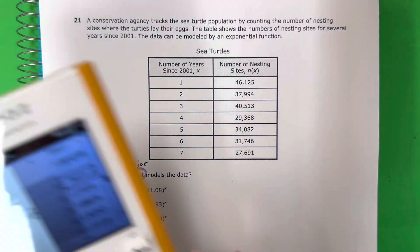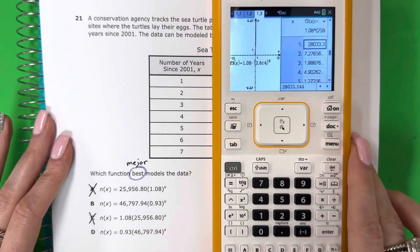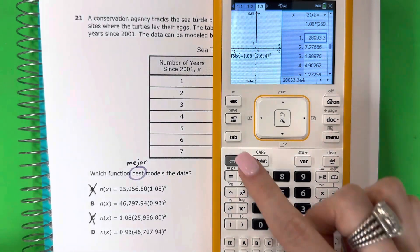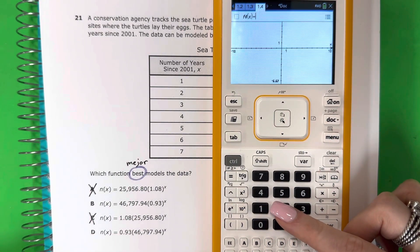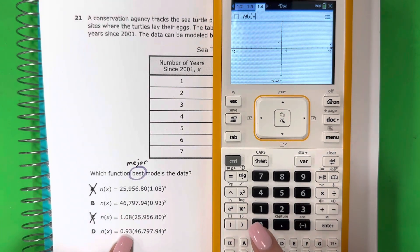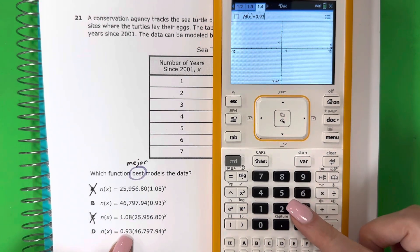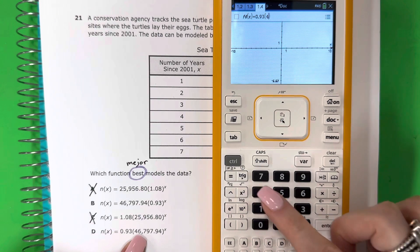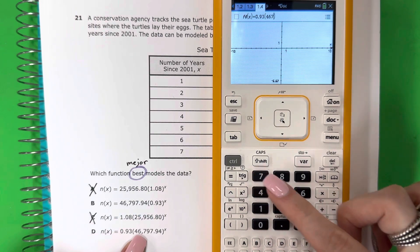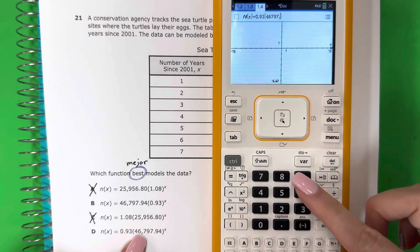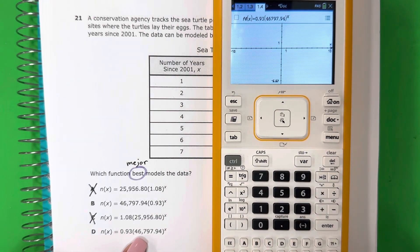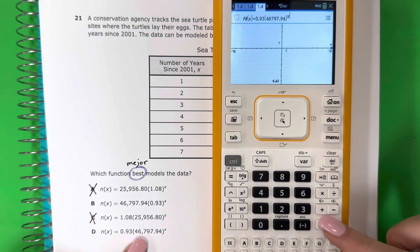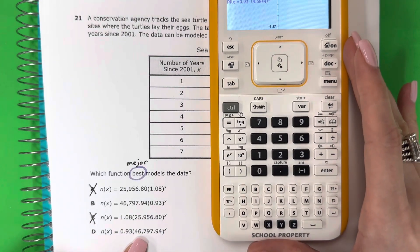Let's go ahead and try D. Ahora la D. Let's do control doc. 2. And let's go ahead and put this one. 0.93, parenthesis, 46,797.94, close parenthesis, exponent x. Remember, no comma. Recuerda, sin coma. Push enter. And then control T.